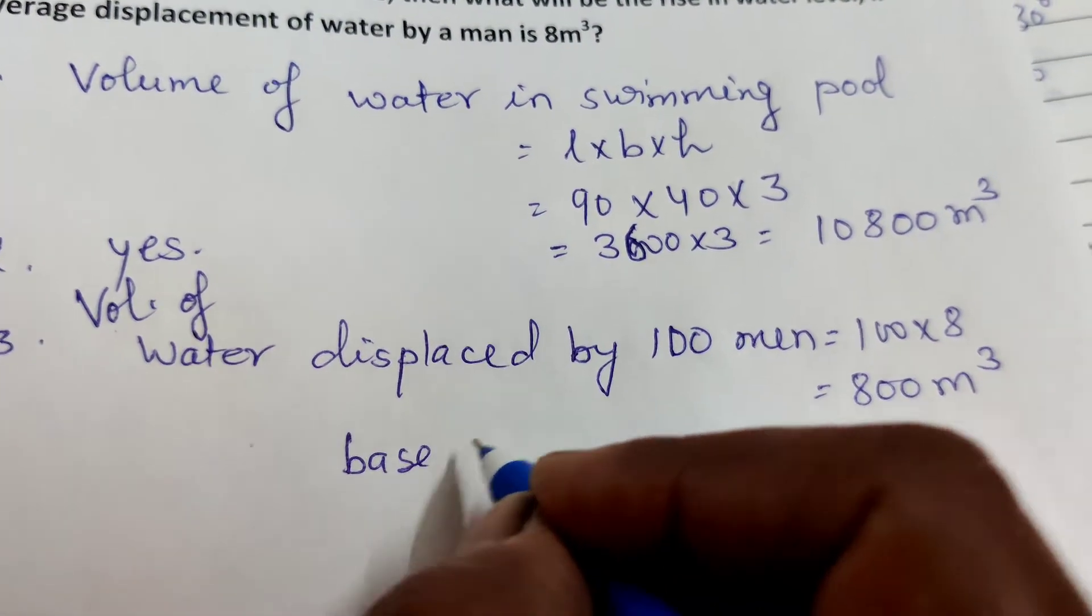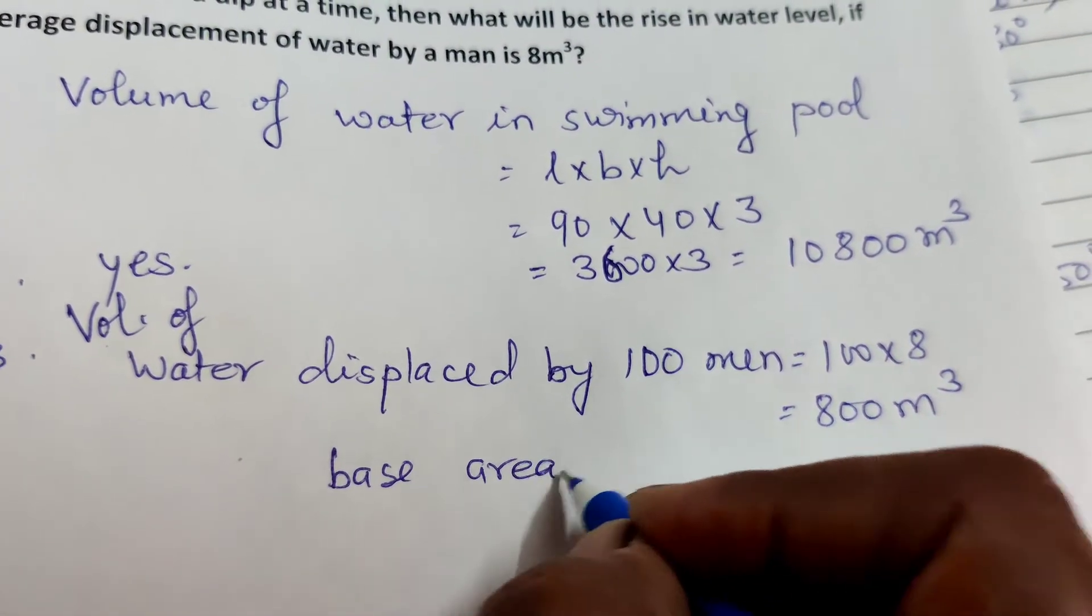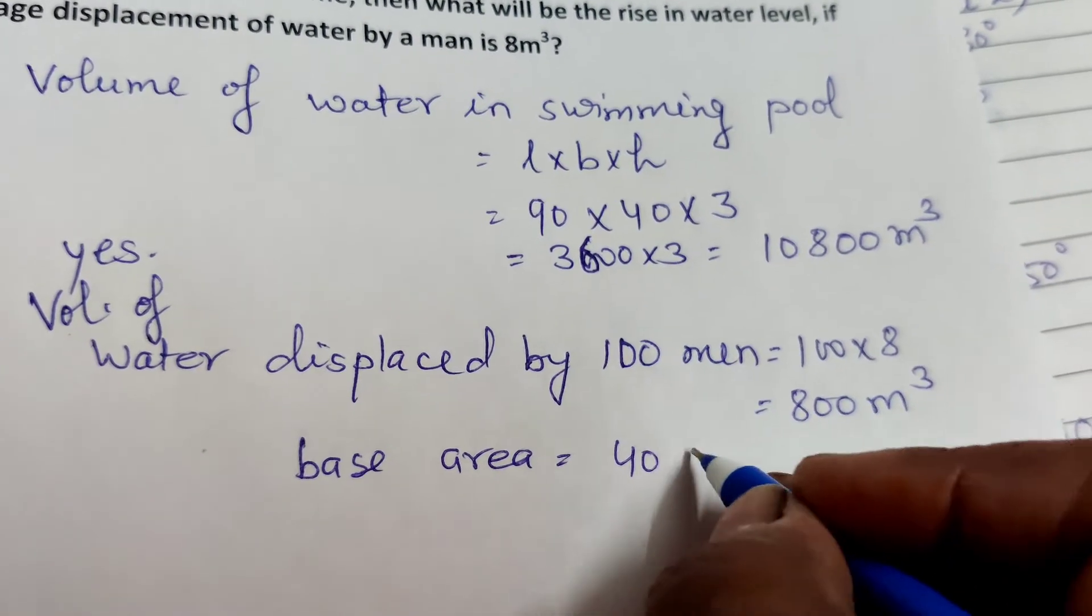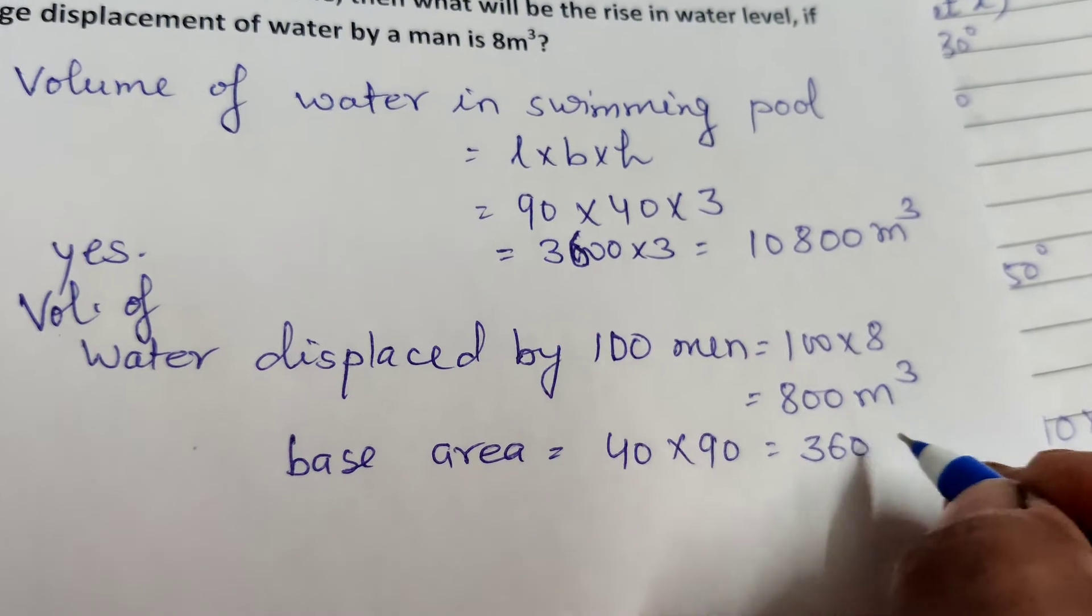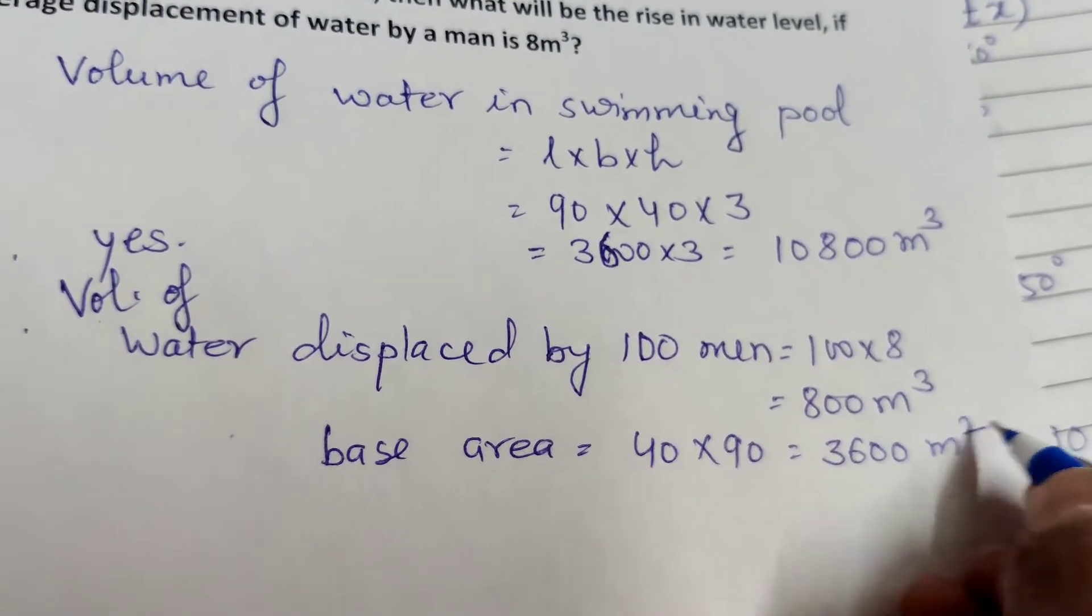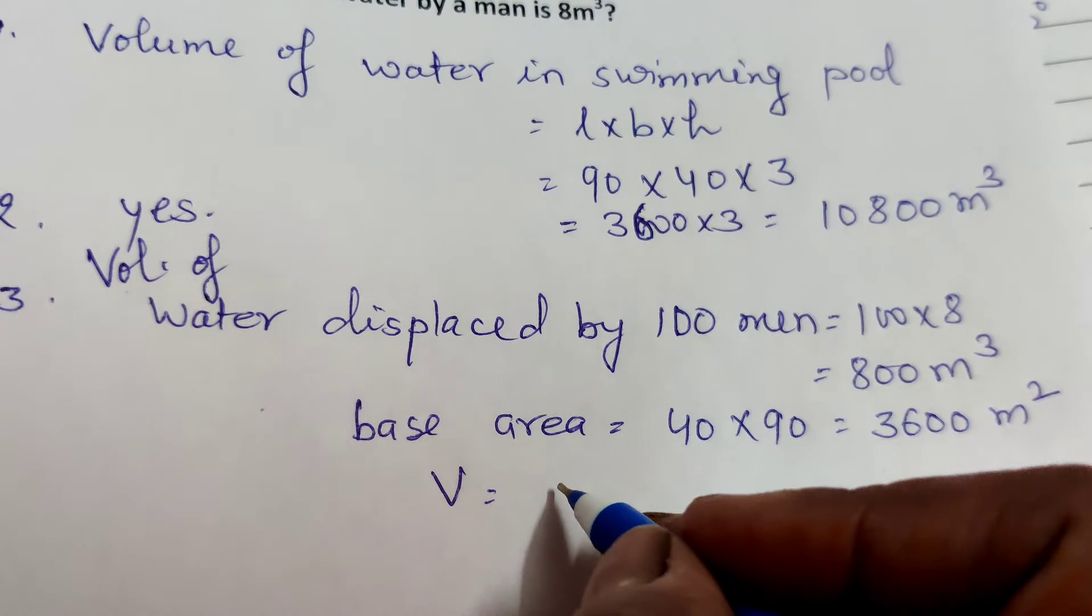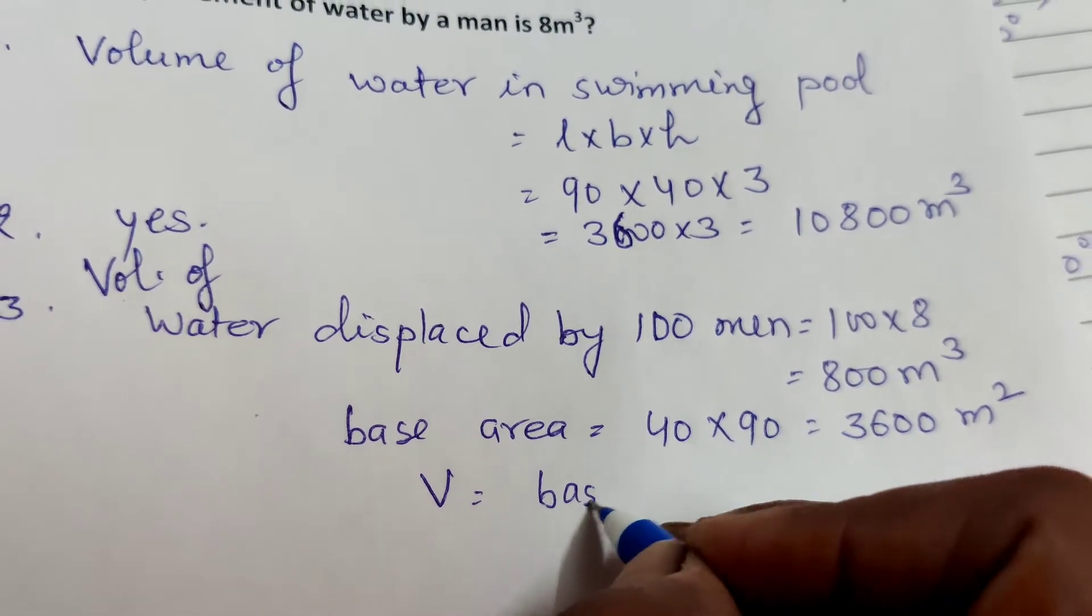The base area equals 40 into 90, which equals 3,600 square meters. Now, volume equals base area into height.